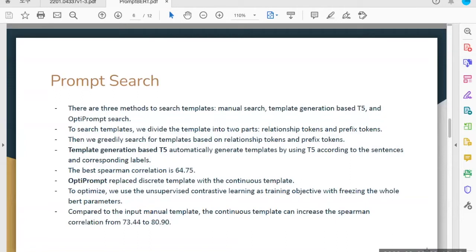Next is prompt search. For prompt-based tasks, one key challenge is to find templates. There are three methods to search for templates: manual search, template generation based on T5, and OptiPrompt. We use Spearman correlation as the main metric to evaluate these templates. For manual search, we need to handcraft templates. To search templates, we divide the template into two parts: relationship tokens which denote the relationship between X and mask, and prefix tokens. Then finally we greedily search for templates based on our relationship tokens and prefix tokens.